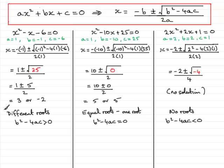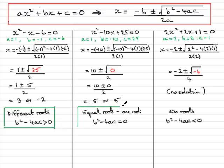Let's highlight these results. Different roots if b squared minus 4ac is greater than 0. Equal roots if b squared minus 4ac is equal to 0. And no roots if b squared minus 4ac is less than 0.